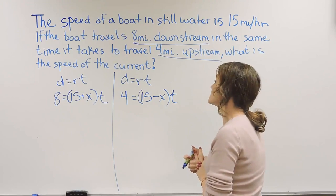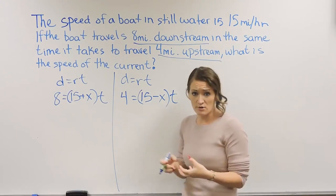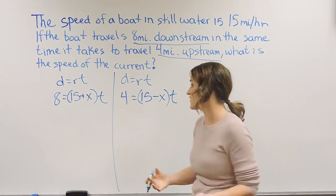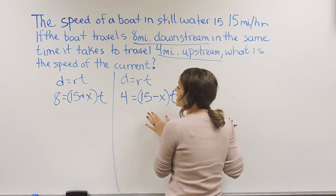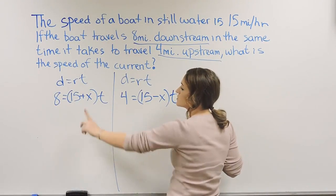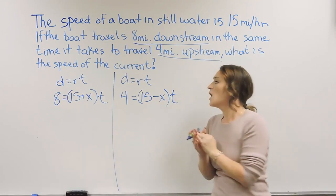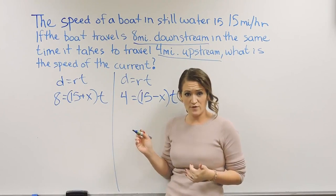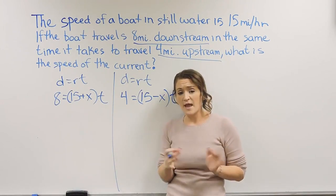Now, in order to take these two equations and kind of merge them together, we need them to be solved for the same thing. And looking at these equations here, the only variables we have are X and T. Well, it's going to be easier for us to solve for T in both of them. So that needs to be our next step here.